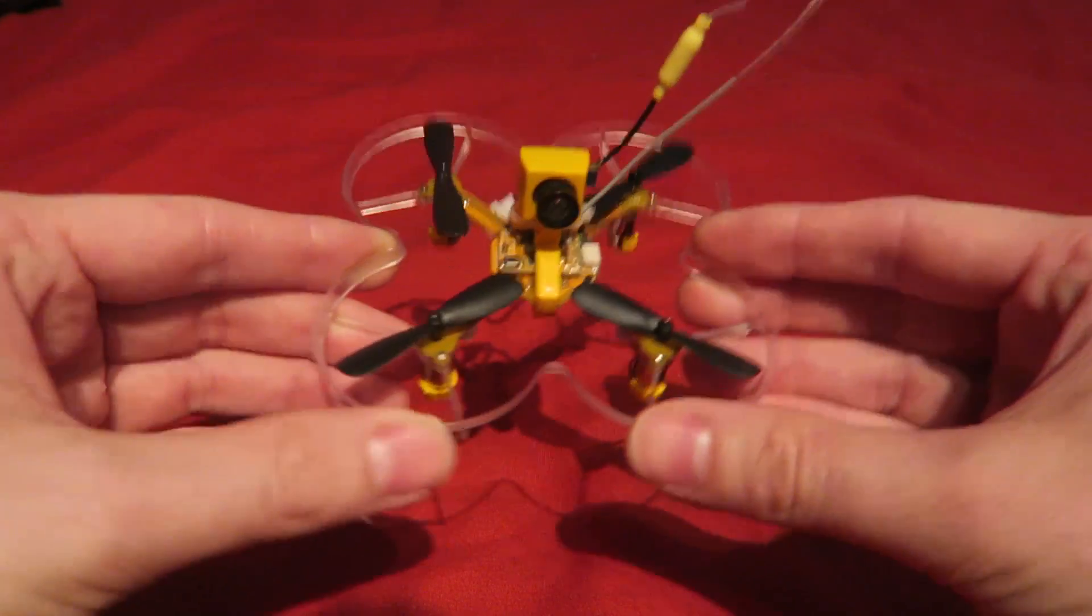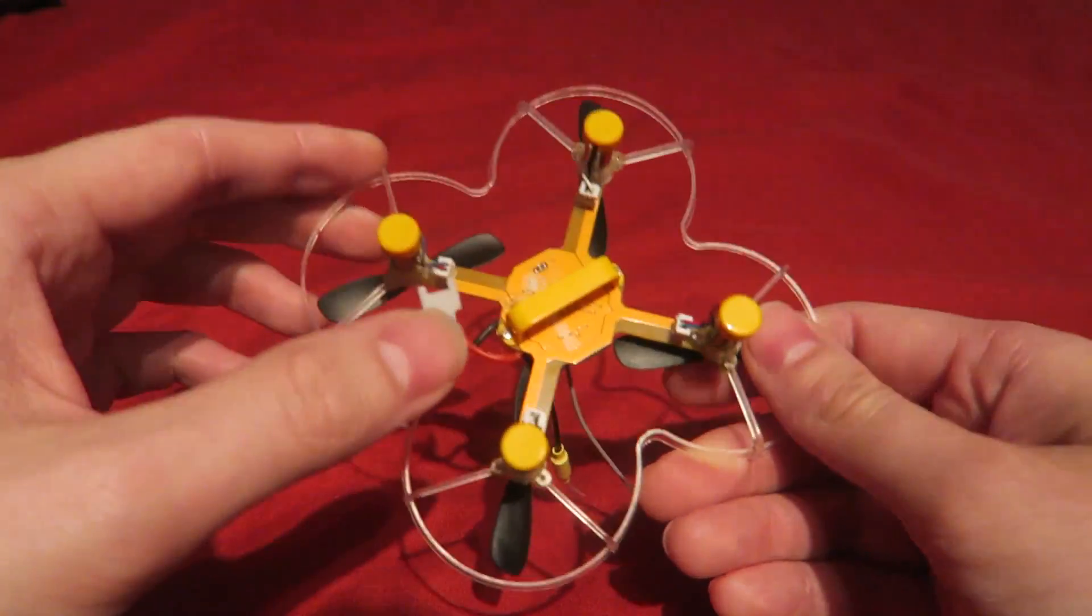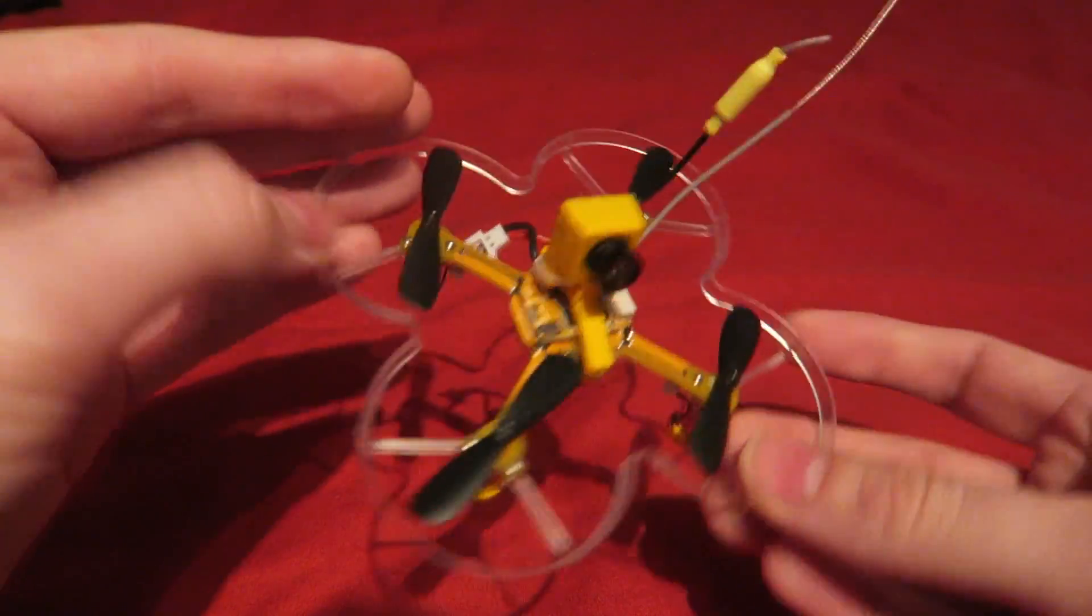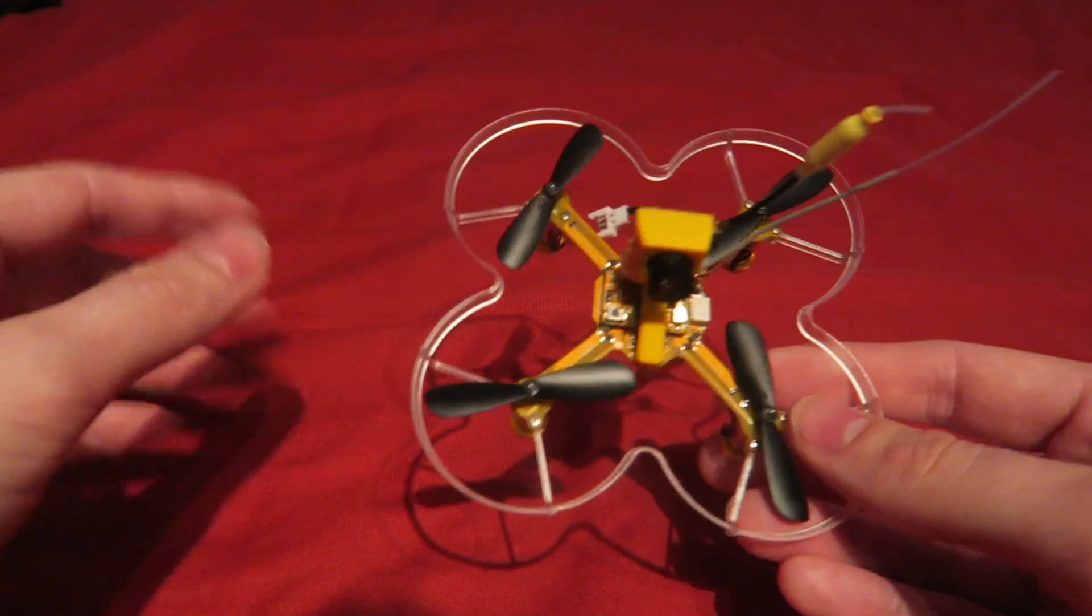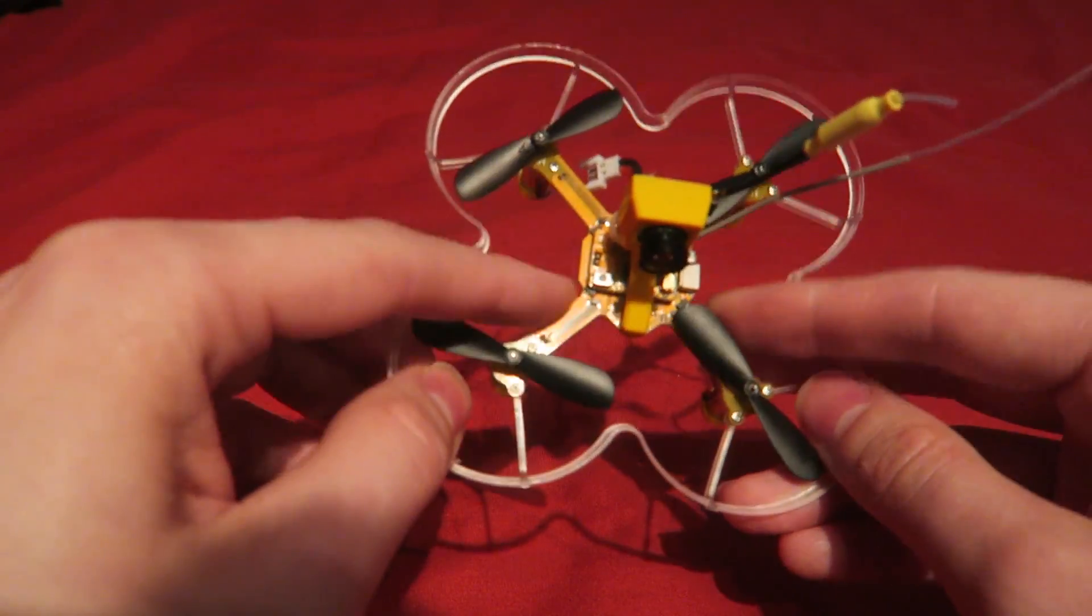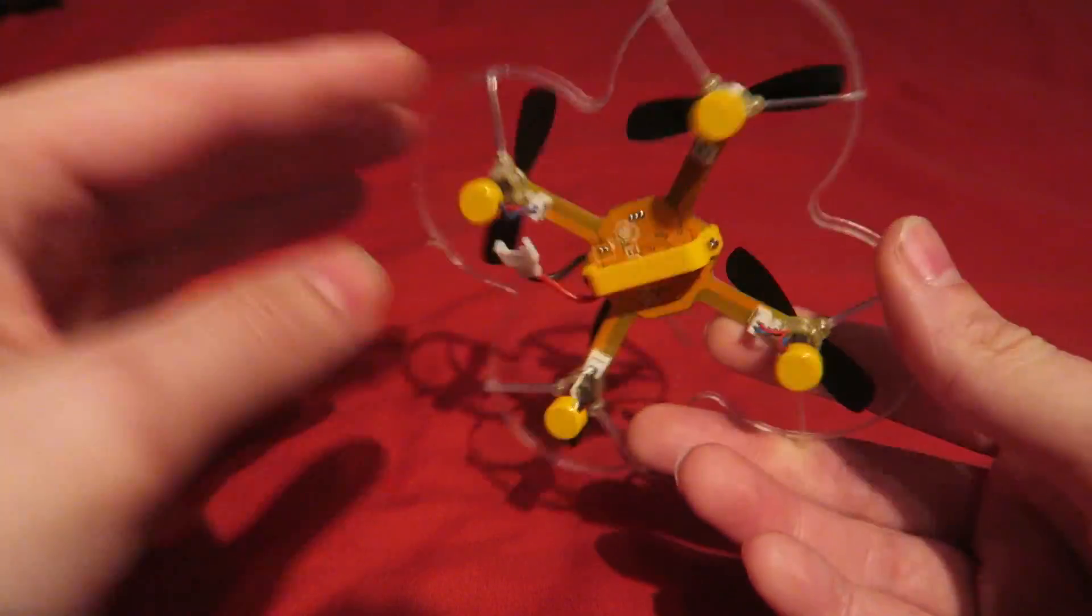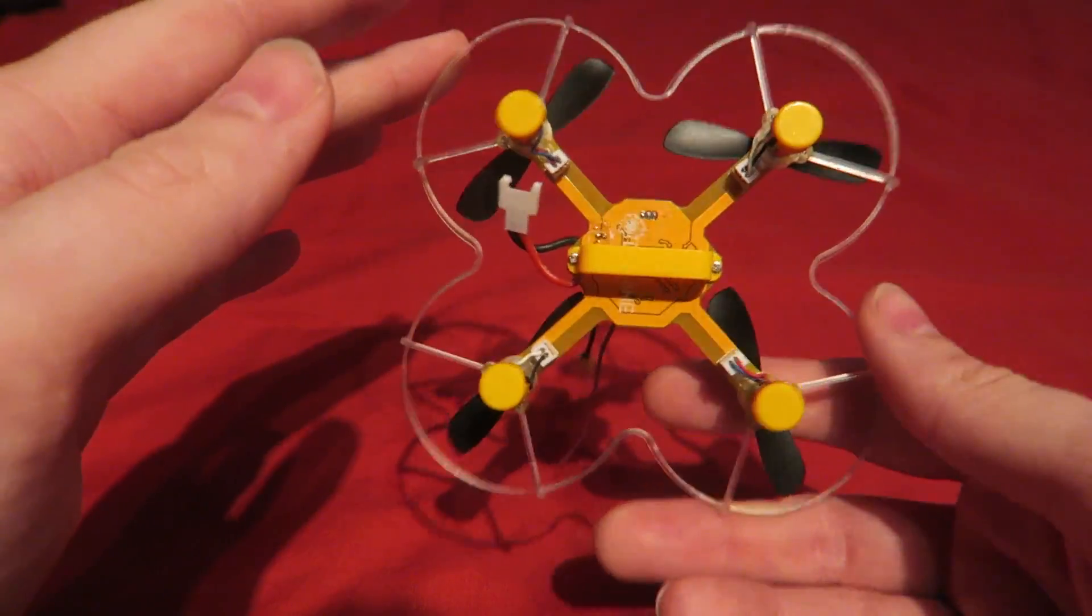So what do you get? Well of course we have the frame which is also the printed circuit board. Now I'm not really a fan of this because if they break then the whole quadcopter is written off however I've had a few like this and I've never broken one so I can't really complain about that.